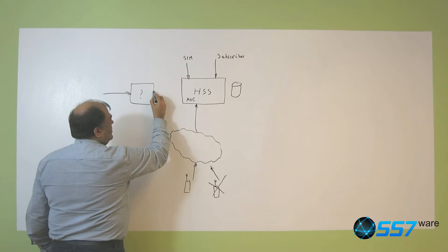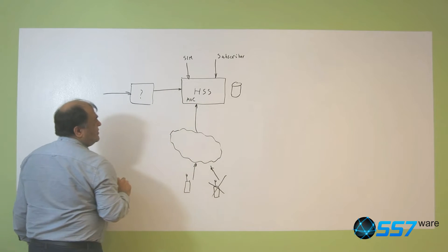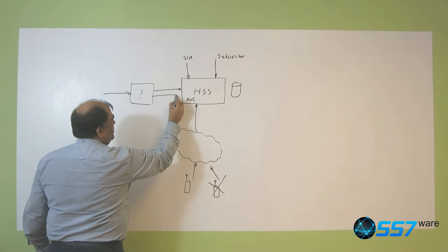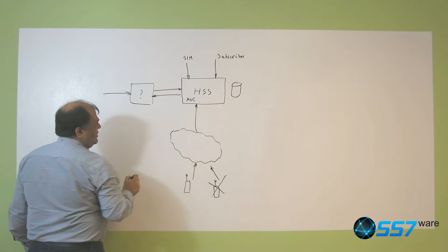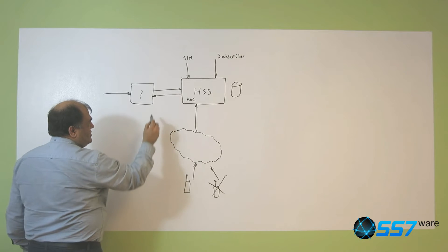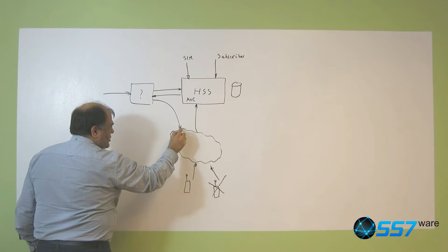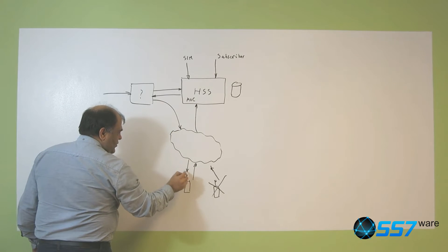To do that it would interrogate the HSS and the HSS would return the address in whatever way the network needs it. So the call will go here and then will reach the phone.